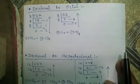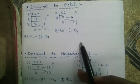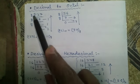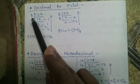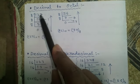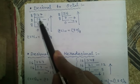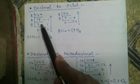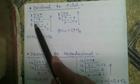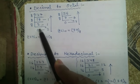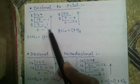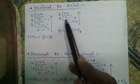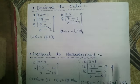Decimal to octal: source number 137, destination base octal or base 8. So 137 ÷ 8 = quotient 17, remainder 1; 17 ÷ 8 = quotient 2, remainder 1; 2 ÷ 8 = quotient 0, remainder 2. Read upward: 211 is the required octal number. Do this yourself.